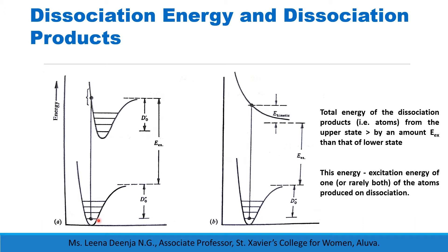That means V double-dash equals zero, and here V-dash equals zero. For dissociation, D₀ double-dash energy is needed from the V double-dash equals zero level. For dissociation in the upper electronic energy level, energy needed from the V-dash equals zero level is D₀-dash. The total energy of dissociation products or atoms from the upper state is greater by an amount equal to E_EX, which is the excitation energy of one — or rarely both — of the atoms produced on dissociation.